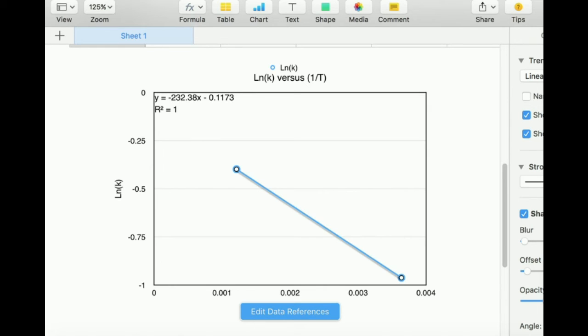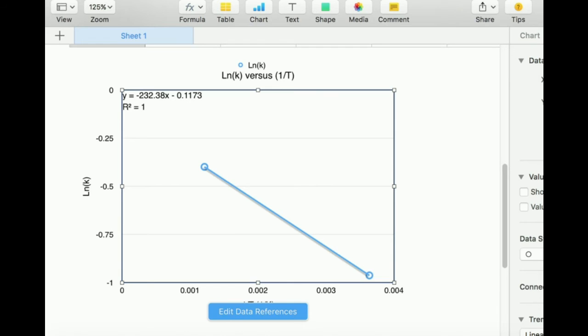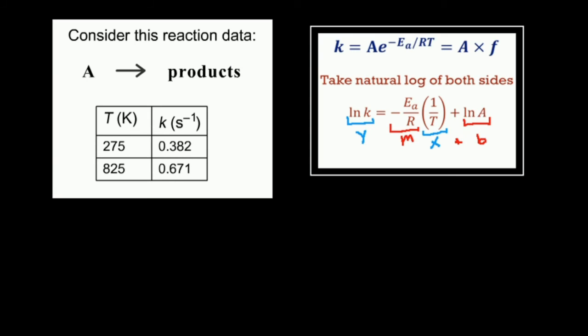Let's think about what this tells us. My slope m is negative 232.38. Remember that the slope is equal to negative activation energy over r. So I know r, that's a constant. I can solve for the activation energy.